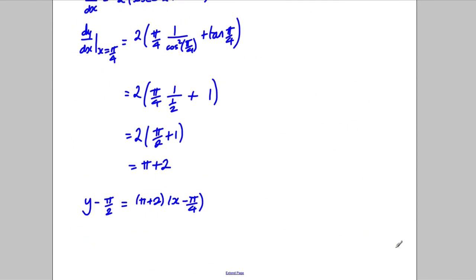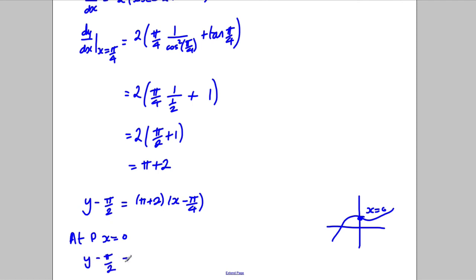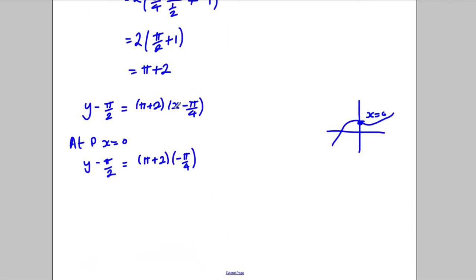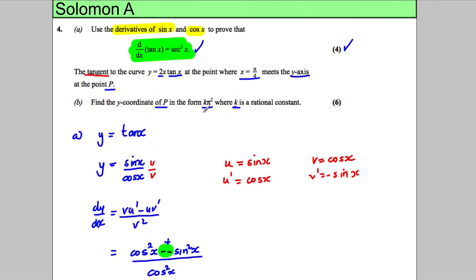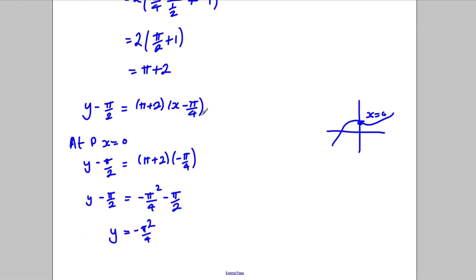The tangent meets the y-axis at point P, where x equals 0. Substituting x equals 0: y minus π/2 equals (π + 2)(−π/4), which equals −π squared/4 minus π/2. Adding π/2 to both sides gives y equals −π squared/4. So the y-coordinate of P is −π squared/4, meaning k equals −1/4.